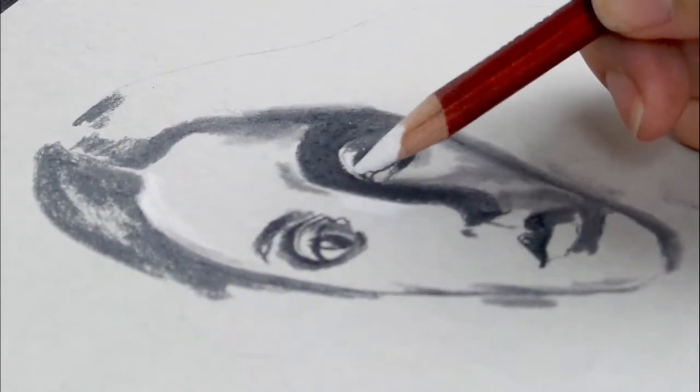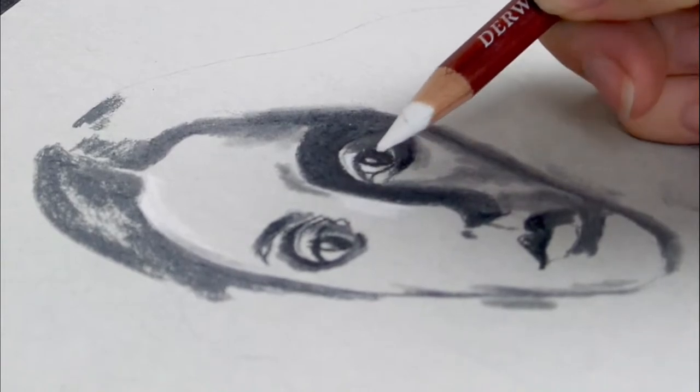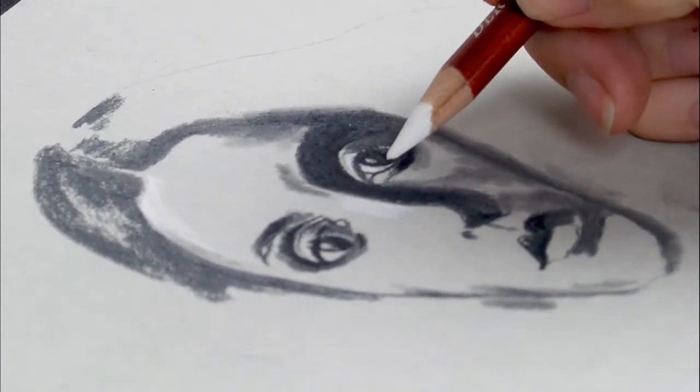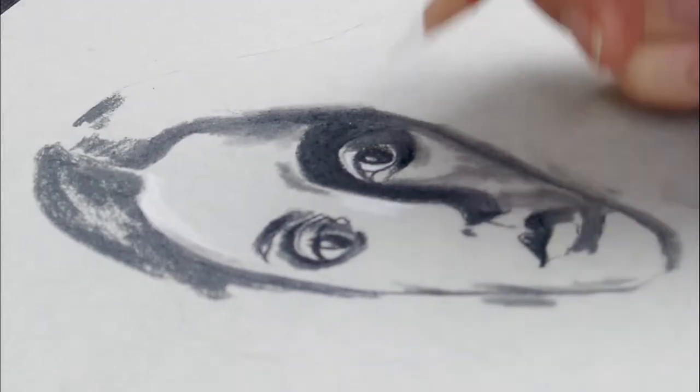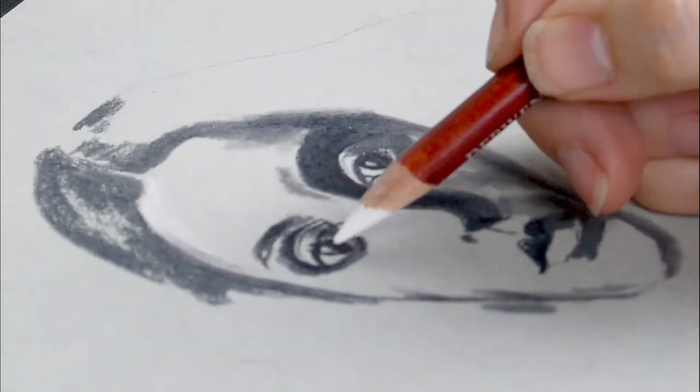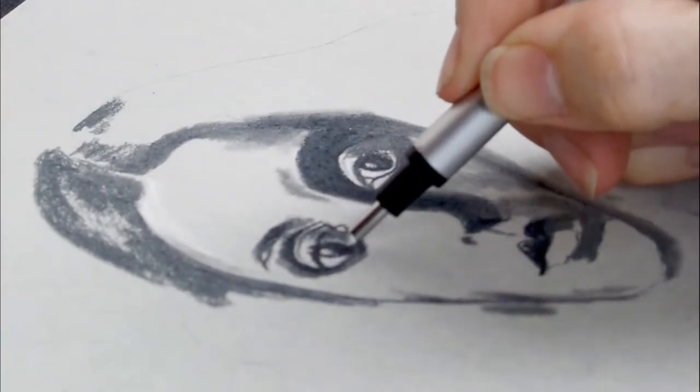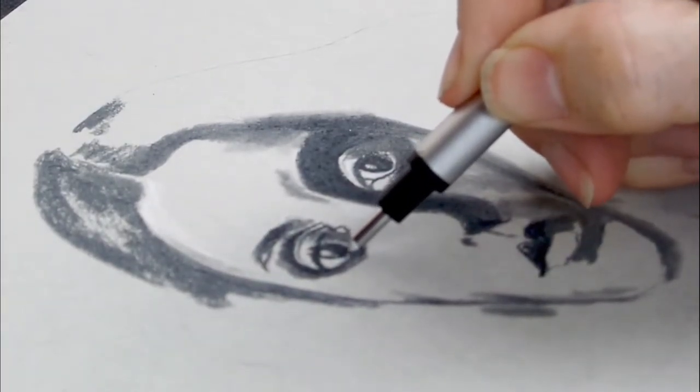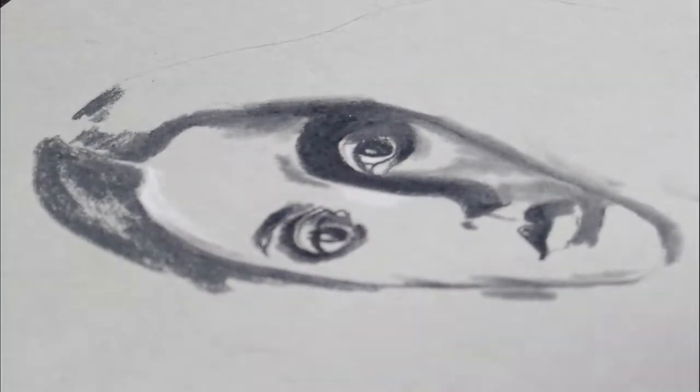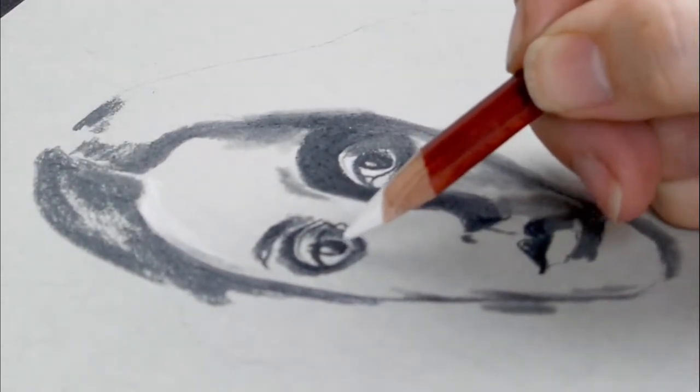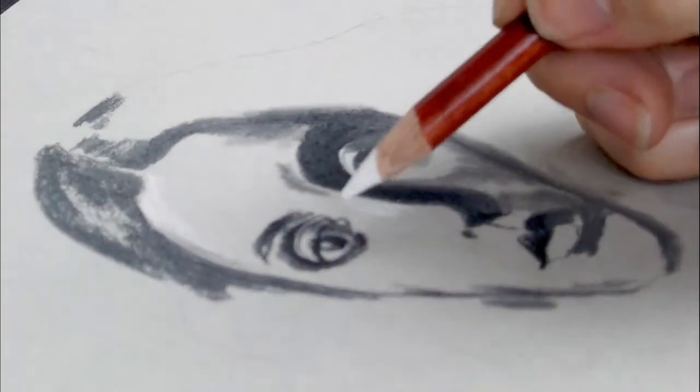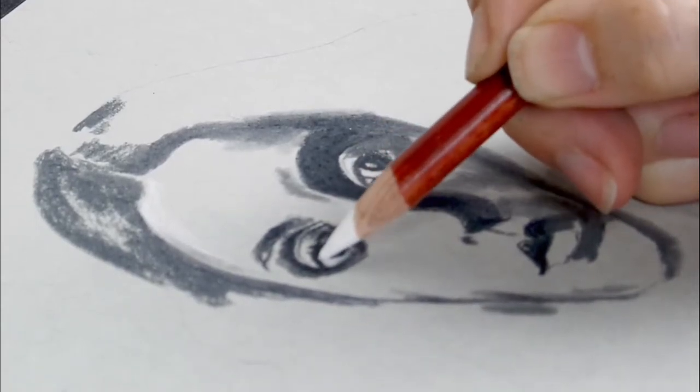Again, it's not a super fine point on purpose because we don't want to get too wrapped up in details at this point. You can also use the Tombow Mono Eraser, which I'm using right now in the eye area to lift out unwanted areas of pigment to create more light lights.